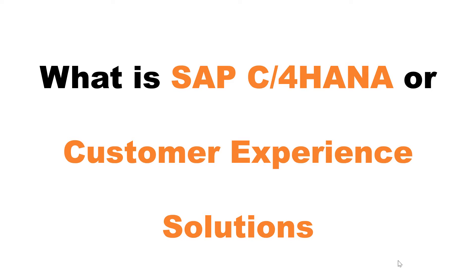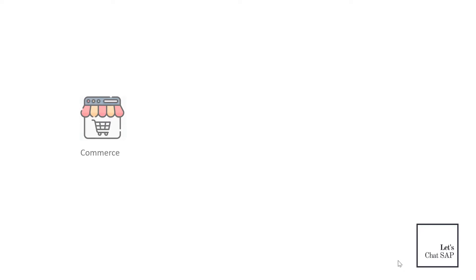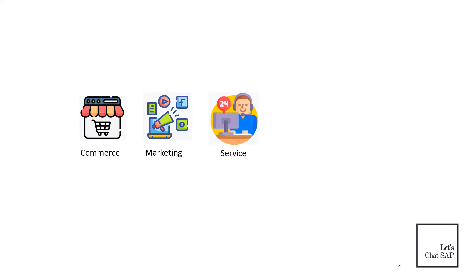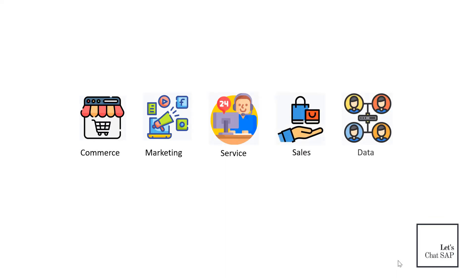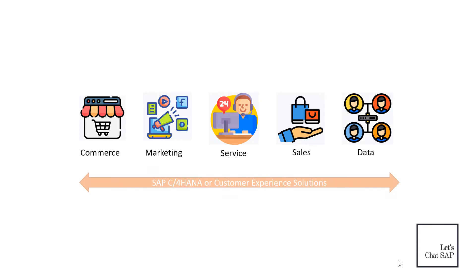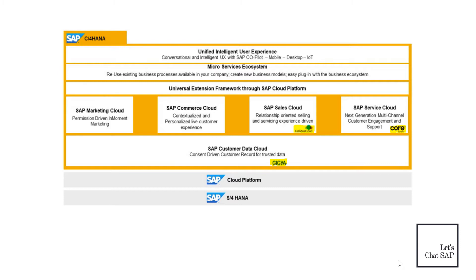Launched in 2018, C4HANA is essentially a new branding of existing solutions from SAP's recently acquired enterprises. C4HANA consists of five different cloud applications: SAP Commerce Cloud, SAP Sales Cloud, SAP Service Cloud, SAP Marketing Cloud, and SAP Customer Data Cloud. SAP claims their customer experience portfolio covers every step in the customer journey — from first contact through to purchase and beyond, providing great customer support with the intention to keep them as a customer for life.